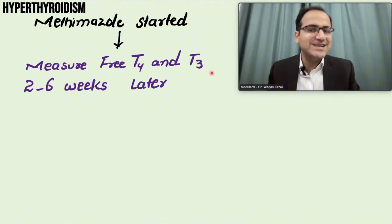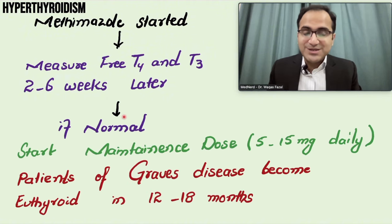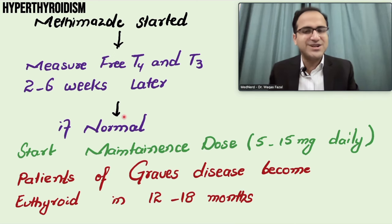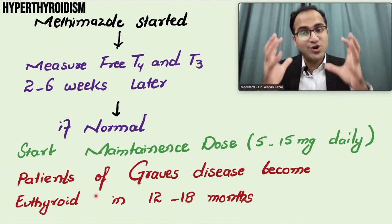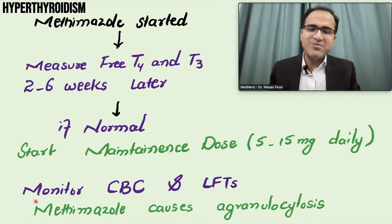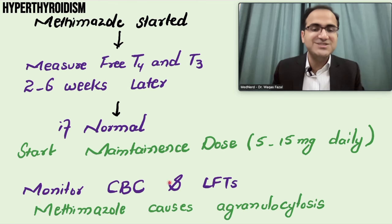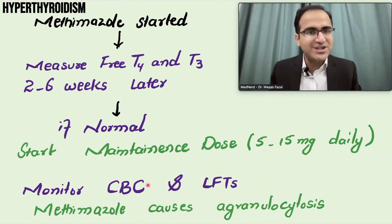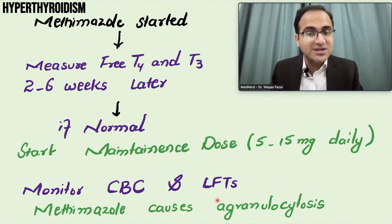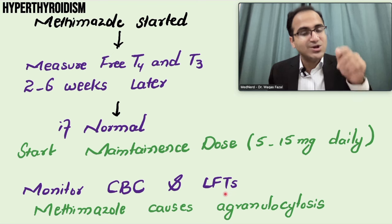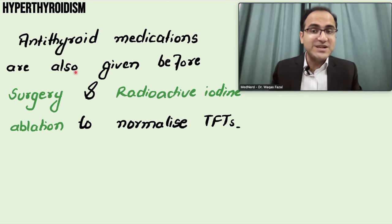Once you start methimazole, measure free T4 and T3 levels two to six weeks later. If they are normal, the disease is controlled and you can shift to a maintenance dose of 5 to 15 mg daily. Patients with Graves' disease usually become euthyroid within 12 to 18 months. Importantly, whenever starting antithyroid drugs, monitor CBC and LFTs, as methimazole is notorious for causing agranulocytosis, and these drugs - especially propylthiouracil - are also hepatotoxic.